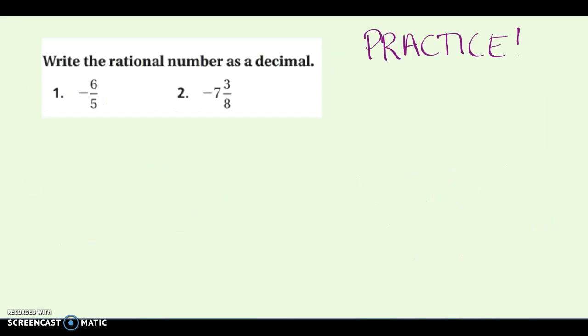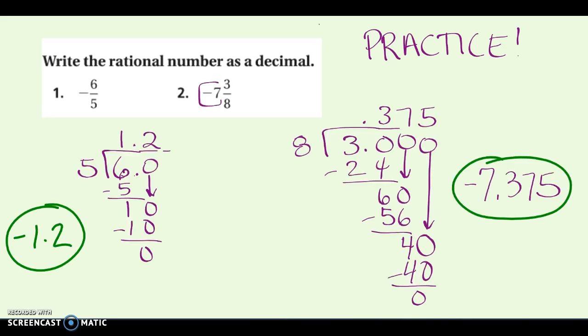The next slide has practice involving long division — pause the video, try them, then come back and check. Here are the answers: in the first one, 5 does fit into 6, giving whole number 1, and continuing gives the decimal part — so negative 1.2. In the second one, I kept the 7 to the side, found the decimal part, and put them together for the final answer: negative 7.375.